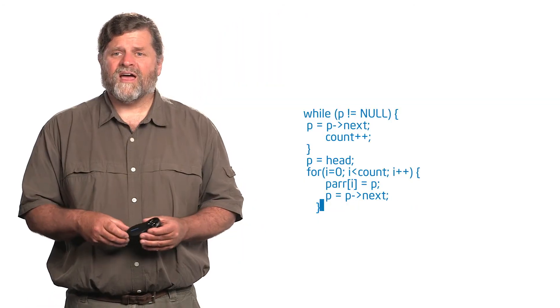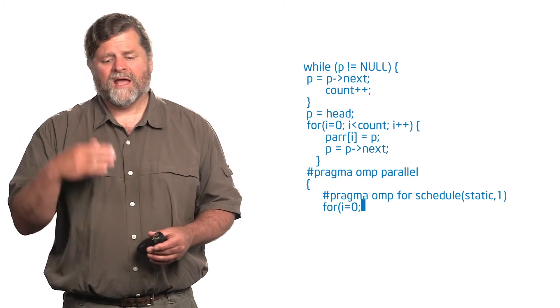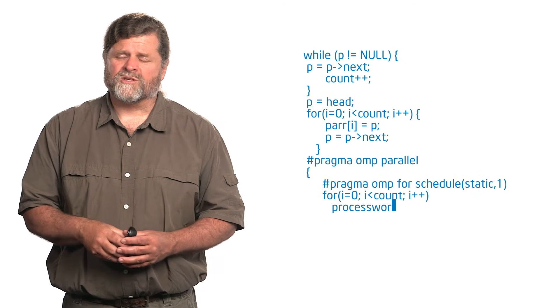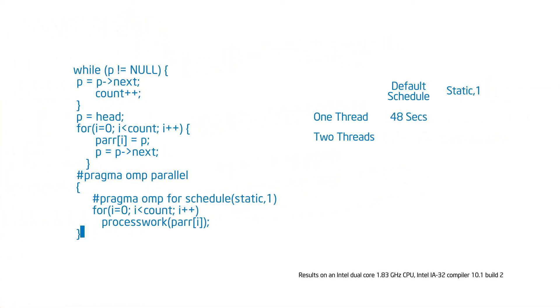Now I do my parallel traversal with a pragma OMP parallel, pragma OMP for, and I do a regular parallel for loop to go through the list. When I did that, on one thread it took 48 seconds, and on two threads it took 39 seconds. Then I played around with the clauses — instead of using the default schedule, I used static, and tried static 1. It went from 45 seconds on one thread down to 28 seconds on two threads. That schedule gave me something a little bit better.